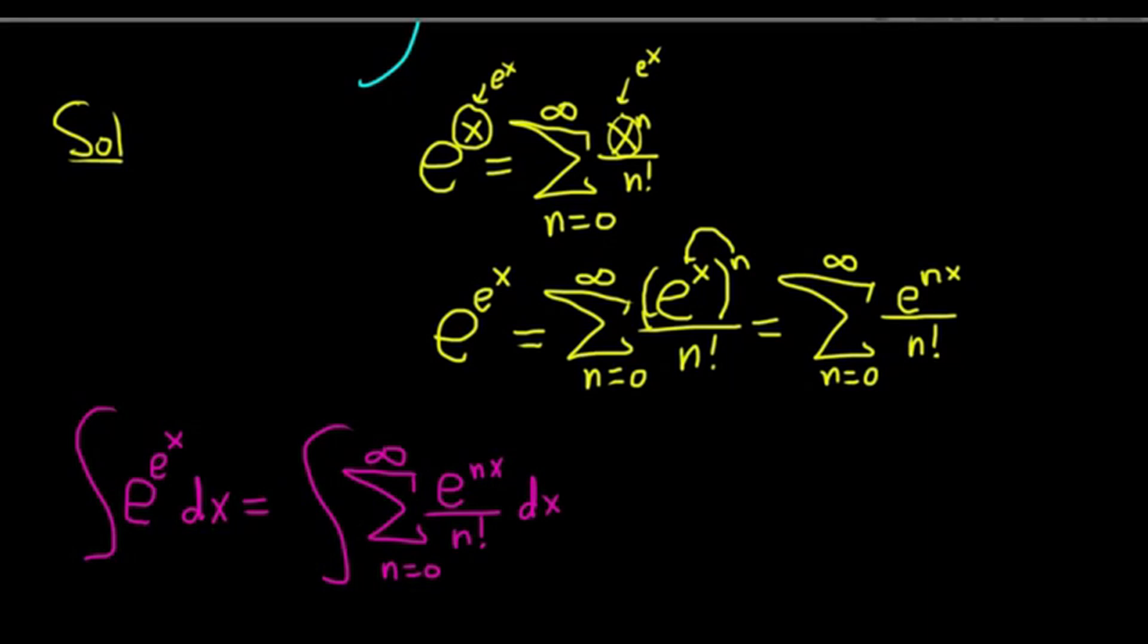If you have e to the nx dx, you can easily integrate this. You let u equal nx. So then du—well, n is a constant—so it's just going to be n dx. If it was 2x, it'd be 2dx. If it was 3x, it'd be 3dx. Because it's nx, it's n dx. Now you divide both sides by n to make it match what you have in your integrand. So you get 1 over n du equals dx.